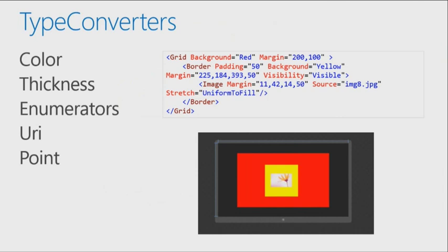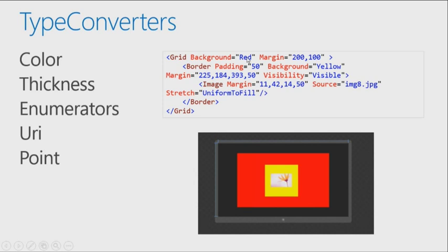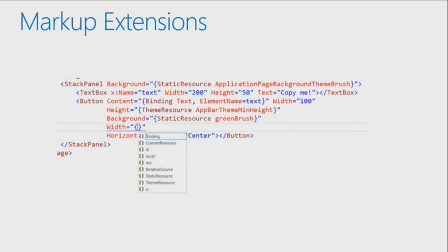This is a type converter as Laurent mentioned earlier — one of the areas where XAML gives you a lot of power. It ships with many type converters for colors, for thickness — which is what you use to declare margins and padding and certain layout-related elements. You're just typing strings: 'background equals red' and there's a type converter underneath that goes in and looks at a strongly-typed object collection of colors, finds Colors.Red, and maps things back and forth. This will happen for enumerators, for URIs, and many different types — all native with the platform.